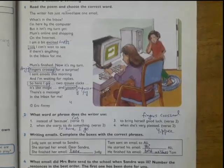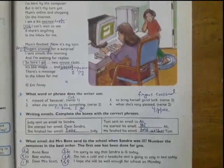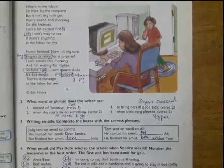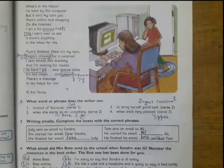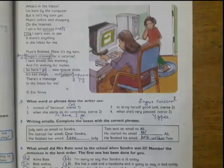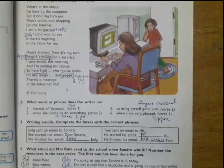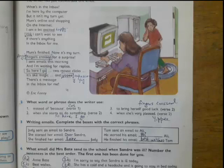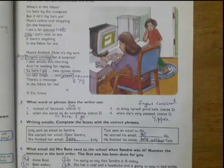Then come to the exercise. What words or phrases does the writer use instead of 'because'? Instead of 'because' in verse 1, we can see that he has used 'cause'. I have written here, you can also write in your books. Second one: when she starts to do something, what phrase she used in second verse? He or she used 'so here I go'.